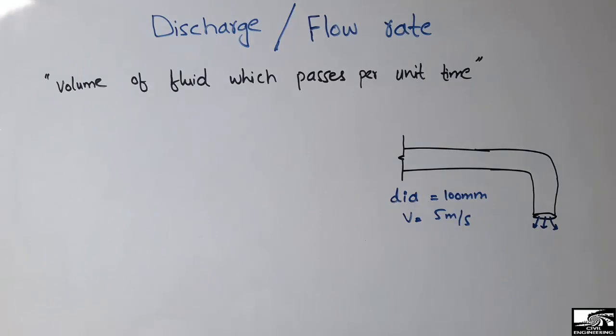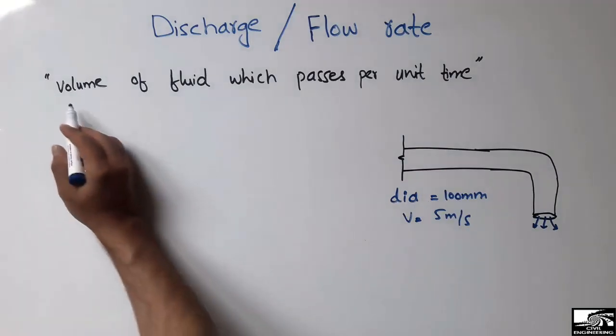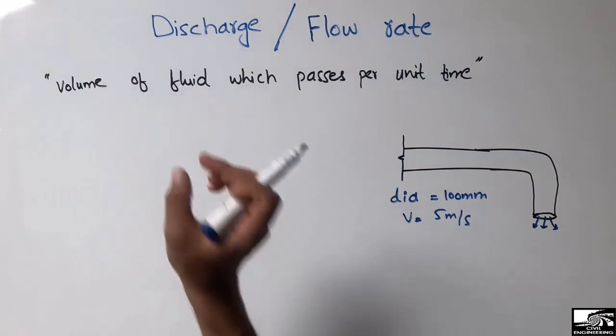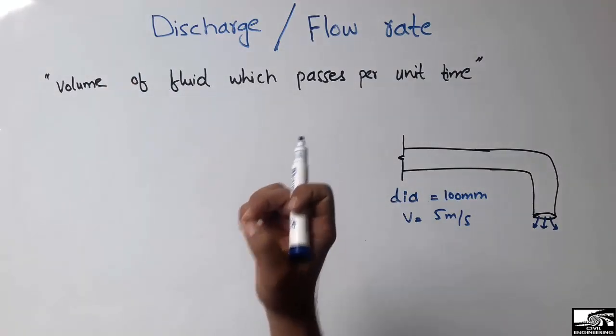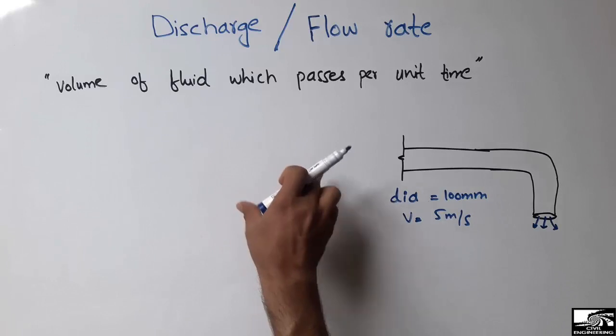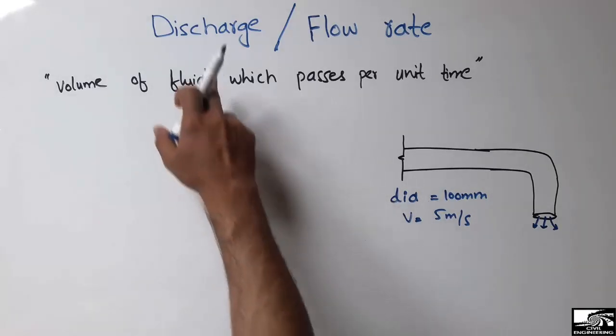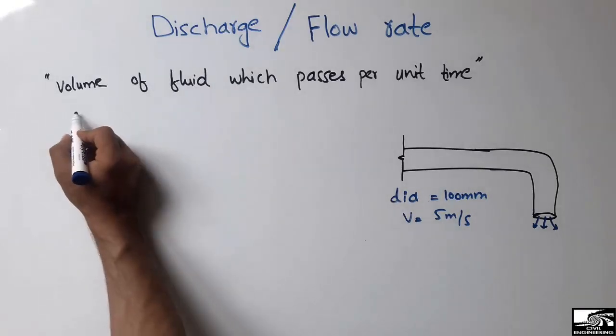It can be defined as the volume of the fluid which passes per unit time. It means that the fluid volume which passes per second in a pipe - we call this quantity the discharge. Discharge can be represented usually by capital Q.